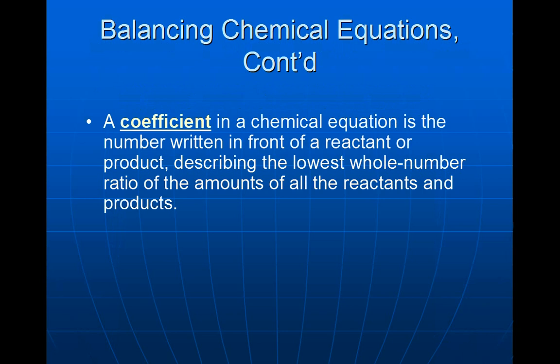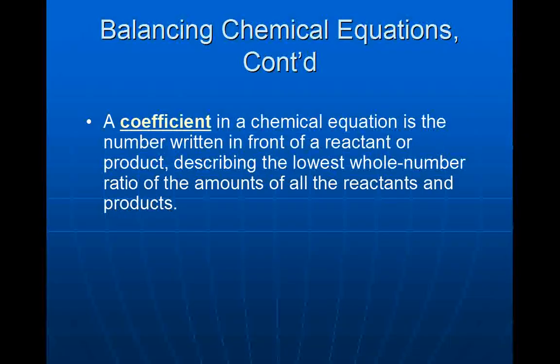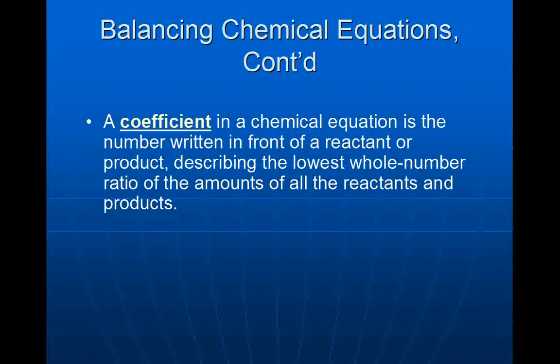A quick definition: a coefficient in a chemical equation is the number written in front of a reactant or product describing the lowest whole number ratio of the amounts of all the reactants and products. This is the only thing in a chemical reaction that we can change. We can write numbers out in front that are going to multiply by the subscripts throughout. We can never change the subscripts, and we can never write a coefficient in the middle of a compound, only before.